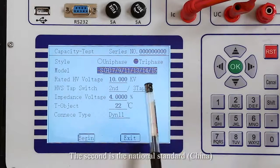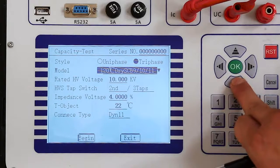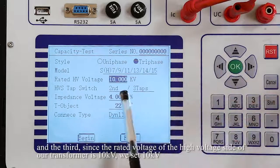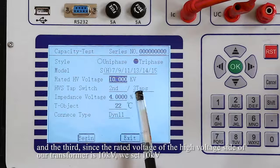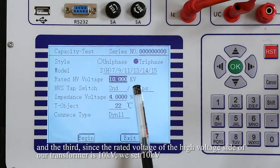The second is national standard. And the third, since the rated voltage of the high-voltage side of our transformer is 10kV, we set 10kV.